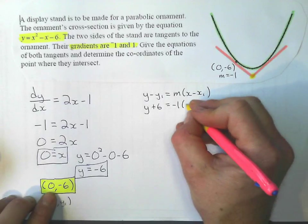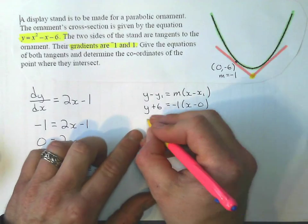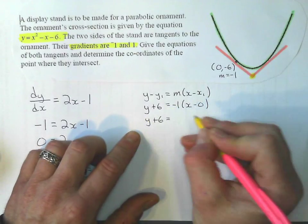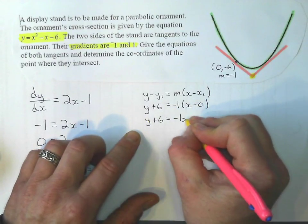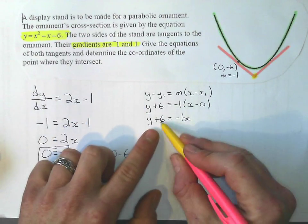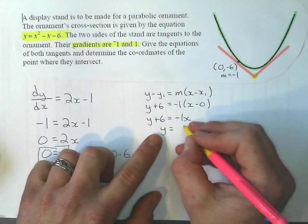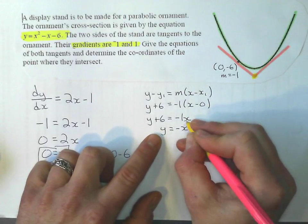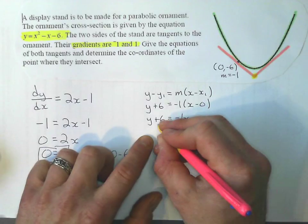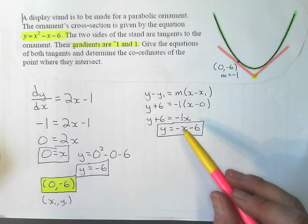I distribute that through and I get y + 6 equals just negative 1x. Shift the positive 6 to the other side and so the equation of that line is y = -x - 6. Alright, and I do the same thing. So that's finished.